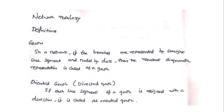A node is a point of interconnection between any two or more branches. Each and every node will be represented as a dot. Then the resultant diagrammatic representation is called a graph. So I'm going to consider a network or circuit, draw all the branches as straight lines, represent all the nodes as dots, and the resultant diagrammatic representation I will call a graph.